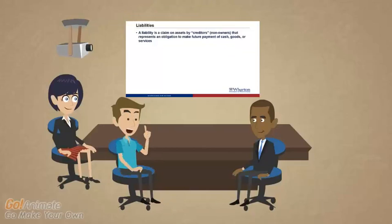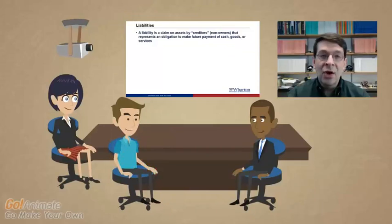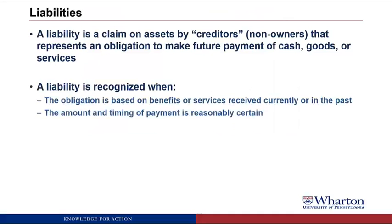Like assets, there are two criteria that have to be satisfied to recognize a liability. First, the obligation is based on benefits or services received currently or in the past. Second, the amount and timing of payment is reasonably certain. For example, if we borrowed money from a bank, we have an obligation to repay the bank based on the benefit of receiving the use of that money — and the amount and timing of repayment is reasonably certain. So borrowing from a bank creates a liability — something like notes payable or mortgages payable.